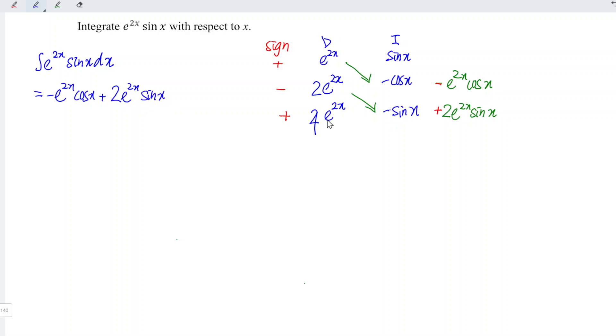And don't forget that none of the functions in the last row is equal to 0, which means that we have integral remaining. Plus minus minus integrate 4e to the power of 2x sin x with respect to x.